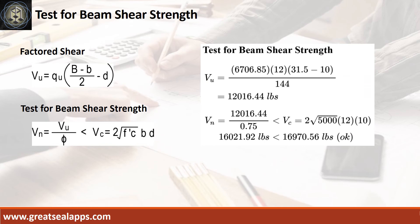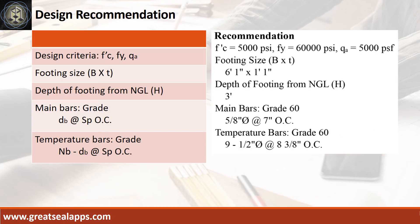The maximum shear force is 12,016.44 pounds. The nominal shear force is 16,021.92 pounds, less than 16,970.56 pounds. Design recommendations: FC' equals 5,000 PSI, FY equals 60,000 PSI, QA equals 5,000 PSF. Footing size is 6 feet 1 inch by 13 inches. Depth of footing from natural grade line: 3 feet. Main bars of grade 60: 5/8-inch diameter bar at 7 inches on center. Temperature bars of grade 60: 9 pieces 1/2-inch diameter bar at 8 and 3/8 inches on center.